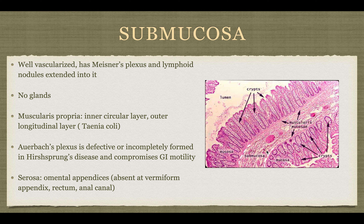The serosa covers everything and has the omental appendices, except for the vermiform appendix, the rectum, and the anal canal. In certain cases, the omental appendices attached to these structures could cause some problems due to infection or torsion.